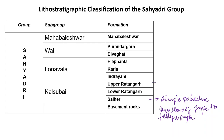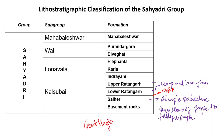The Ratangad formation comprises compound lava flows. It is separated from the underlying Salher formation by the Giant Plagioclase Basalt (GBP). This horizon consists of huge phenocrysts of plagioclase and is also known as the megacryst horizon.